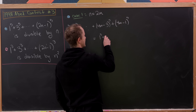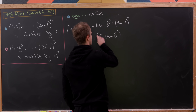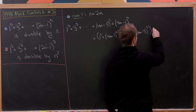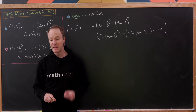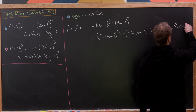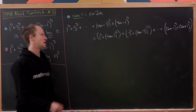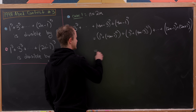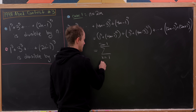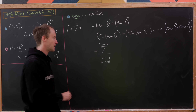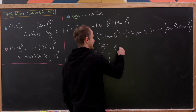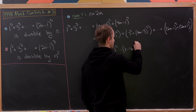We'll have 1 to the fifth plus 4m minus 1 to the fifth, then 3 to the fifth plus 4m minus 3 to the fifth, all the way up to 2m minus 1 to the fifth plus 2m plus 1 to the fifth. Putting these together in summation notation: sum as k goes from 1 to 2m minus 1 over odd k, of k to the fifth, minus k minus 4m to the fifth — factoring out a minus sign.